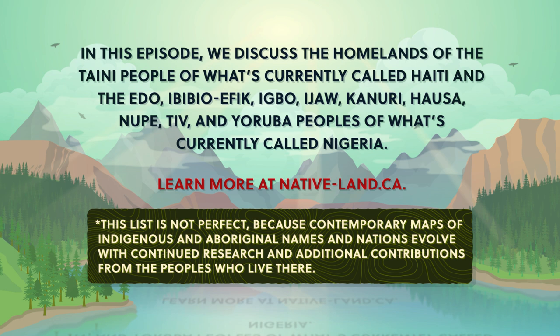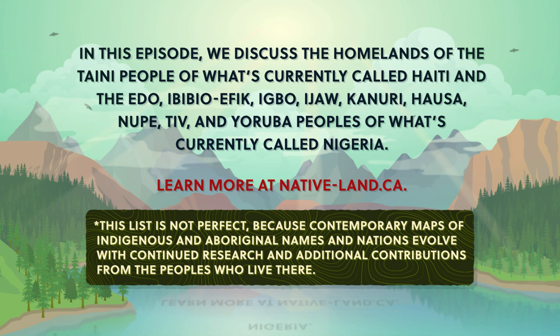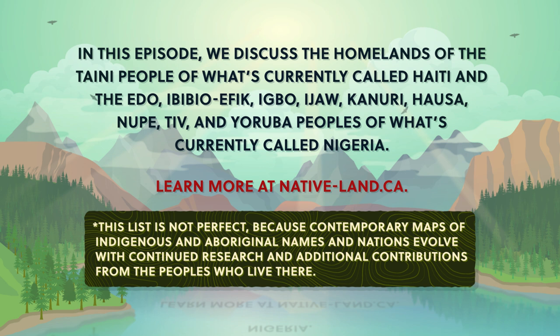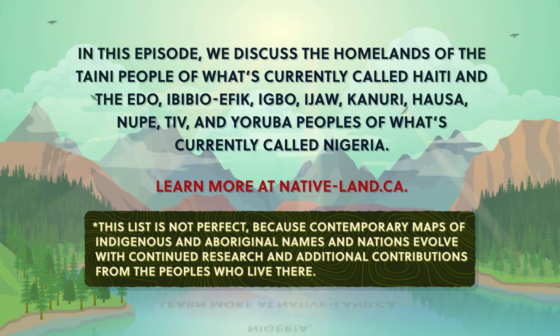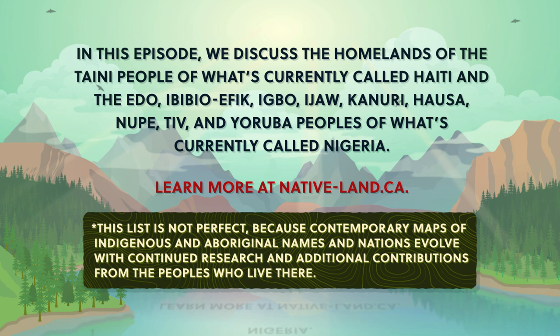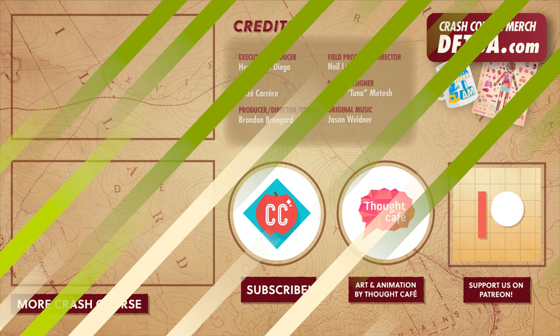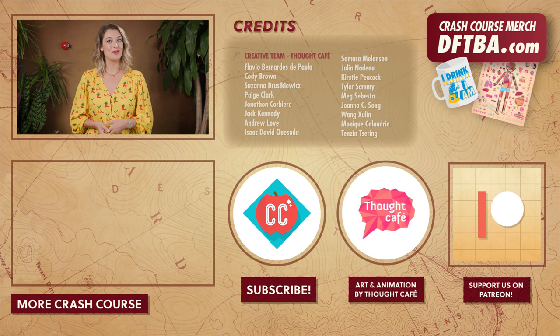Many maps and borders represent modern geopolitical divisions that have often been decided without the consultation, permission, or recognition of the land's original inhabitants. Many geographical place names also don't reflect the indigenous or aboriginal peoples' languages. So we at Crash Course want to acknowledge these peoples' traditional and ongoing relationship with that land and all the physical and human geographical elements of it. We encourage you to learn about the history of the place you call home through resources like nativeland.ca and by engaging with your local indigenous and aboriginal nations through the websites and resources they provide. Thanks for watching this episode of Crash Course Geography. If you want to help keep Crash Course free for everyone forever, you can join our community on Patreon.